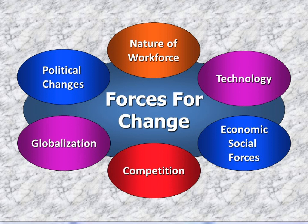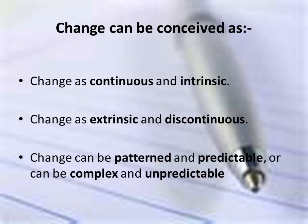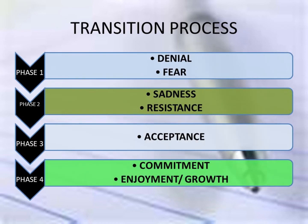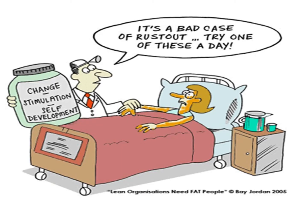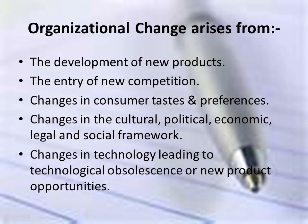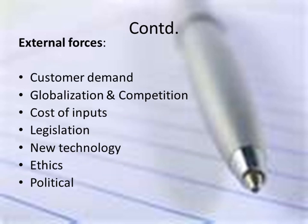Departmentalization can be done based on function, customer, geographical territory, or project. Spans of Control: The span of control refers to the number of people reporting to a specific manager. The span of control can vary from narrow to wide. The narrower the span of control, the closer the supervision and the higher the administrative costs as a result of a higher manager-to-worker ratio. Leanness and administrative efficiency dictate wide spans of control.